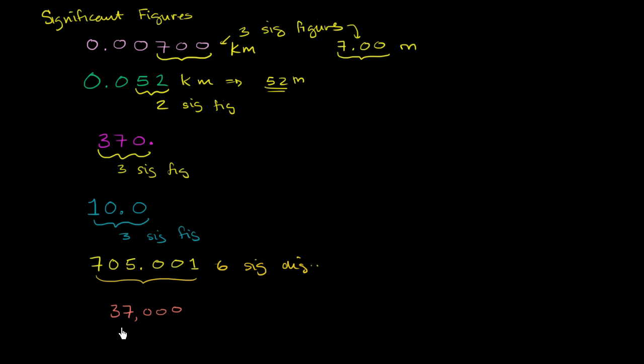Now this last one is ambiguous. The 37,000, it's not clear whether you measured exactly 37,000. Maybe you measured to the nearest one and you got an exact number, you got exactly 37,000. Or maybe you only measured to the nearest thousand. So it depends on what, you know, there's a little bit of ambiguity here. If you just see something written exactly like this, you would probably say, if you had to guess, or not guess, if there wasn't any more information, you would say that there's just two significant digits.